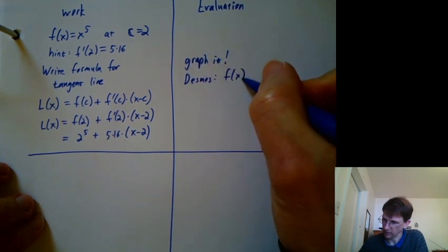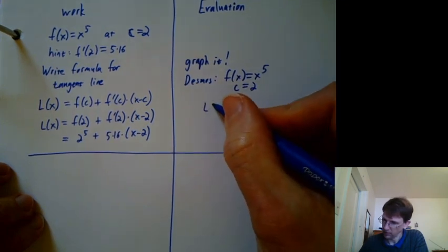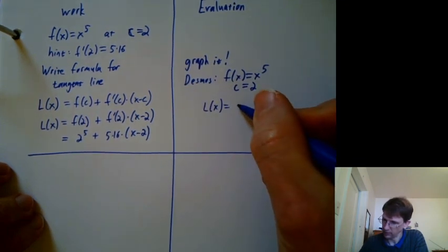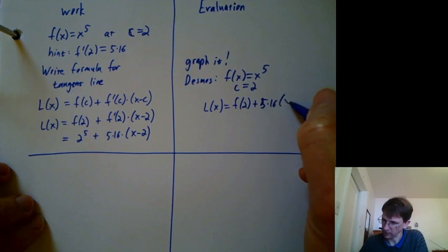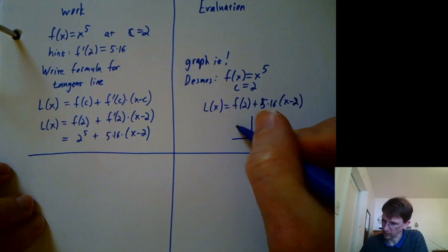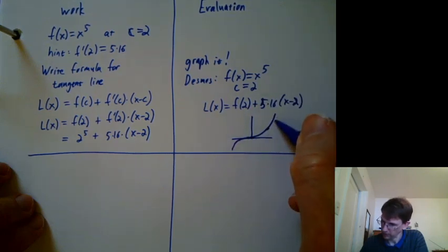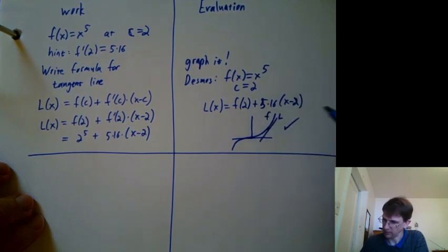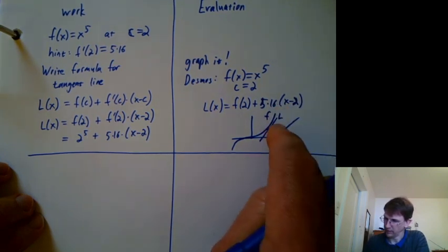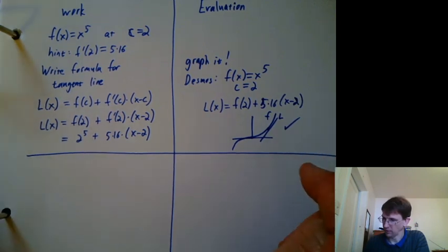So I would go to Desmos, and I'd say f of x equals x to the 5th, c equals 2, l of x equals f of 2 plus 5 times 16 x minus 2. And hopefully, I would get a graph. Let's see. Something like this. And if that works, then I'm happy. So this is l and this is f. And if that graph, if the line is actually tangent to the curve, then that shows that I probably did my work right.